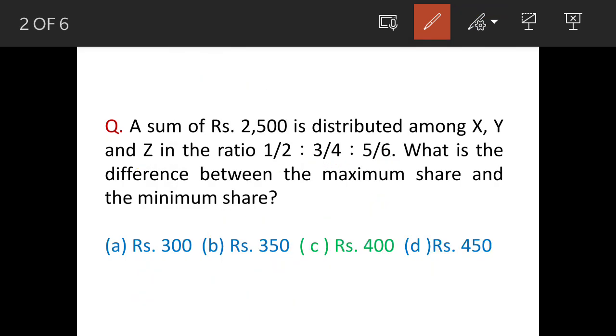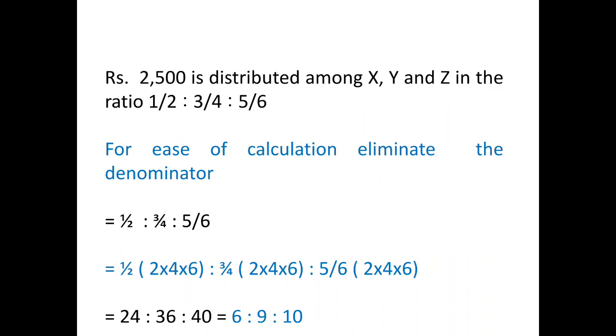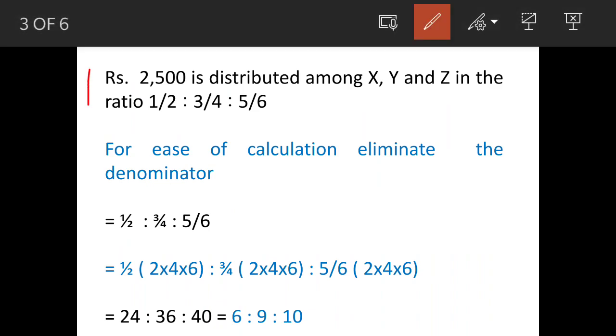The question says 2,500 is distributed among these three people in this ratio. But if we calculate with this ratio directly, it will be very difficult and time-consuming.